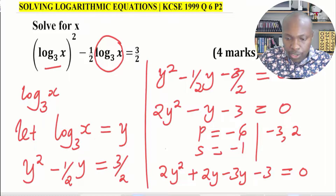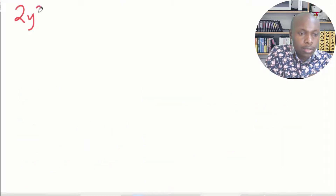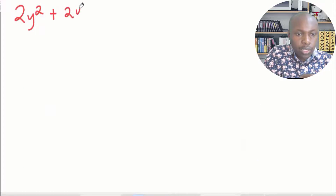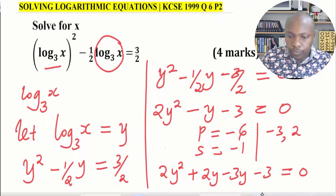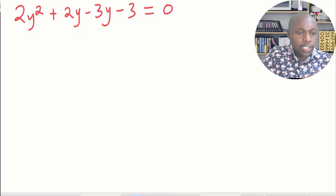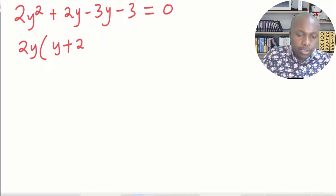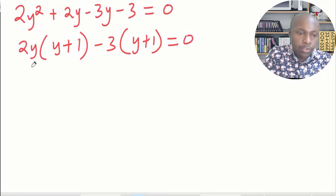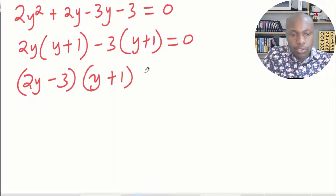Factorizing: from 2y squared plus 2y minus 3y minus 3 equals 0, take 2y common from the first two terms to get 2y times (y plus 1), and negative 3 common from the last two terms to get negative 3 times (y plus 1). This gives (2y minus 3)(y plus 1) equals 0.